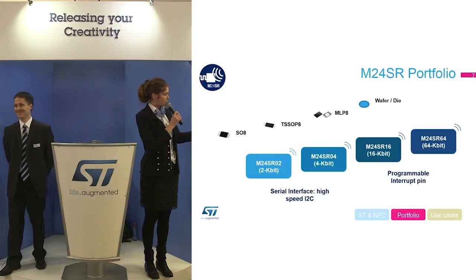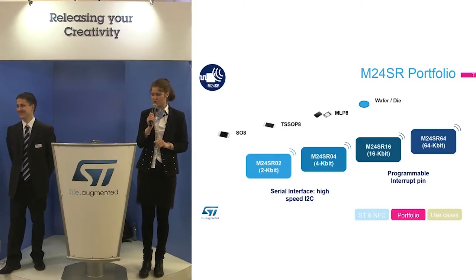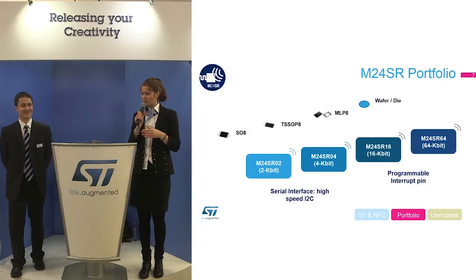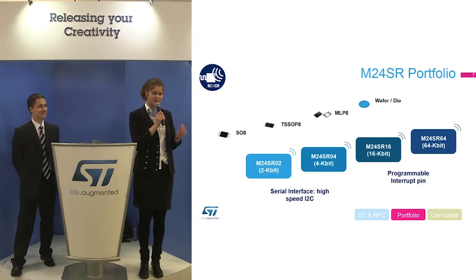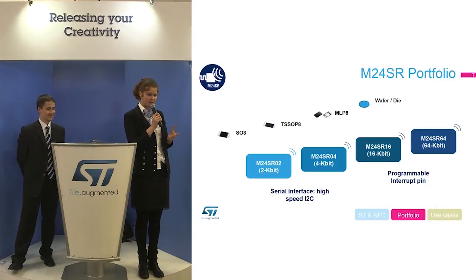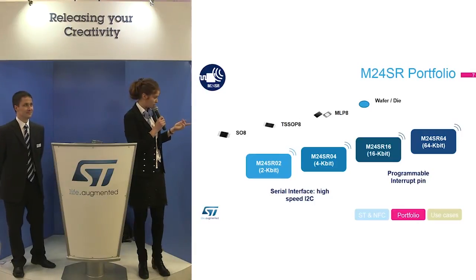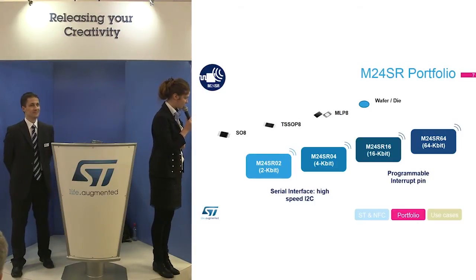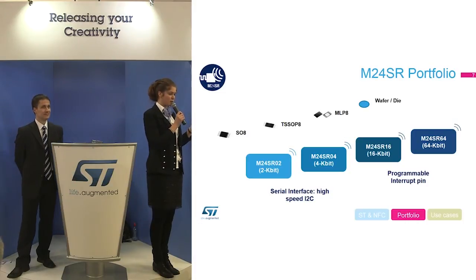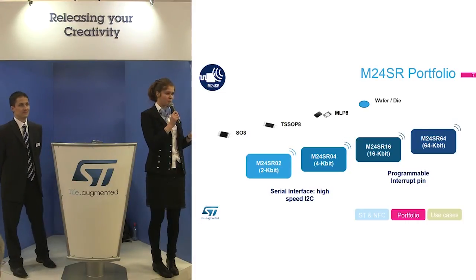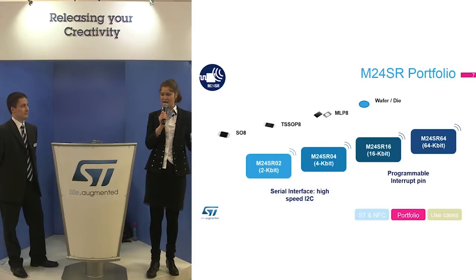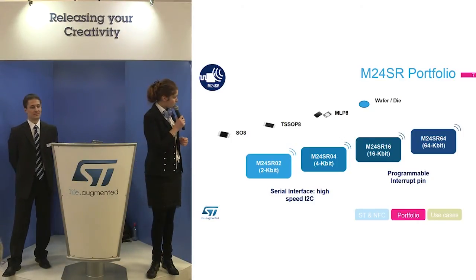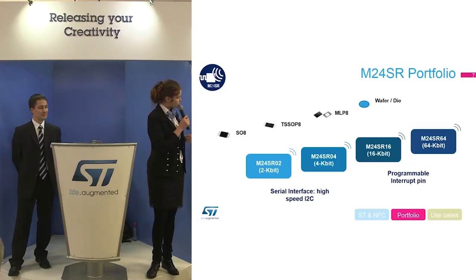There are two specific functions on the M24SR. One is RF enable/disable — for example, if you want to hide that there is an NFC component inside your application and then activate it via I²C depending on your needs. The other is a general-purpose output pin that allows you to signal the microcontroller to wake up or notify it of an interrupt.